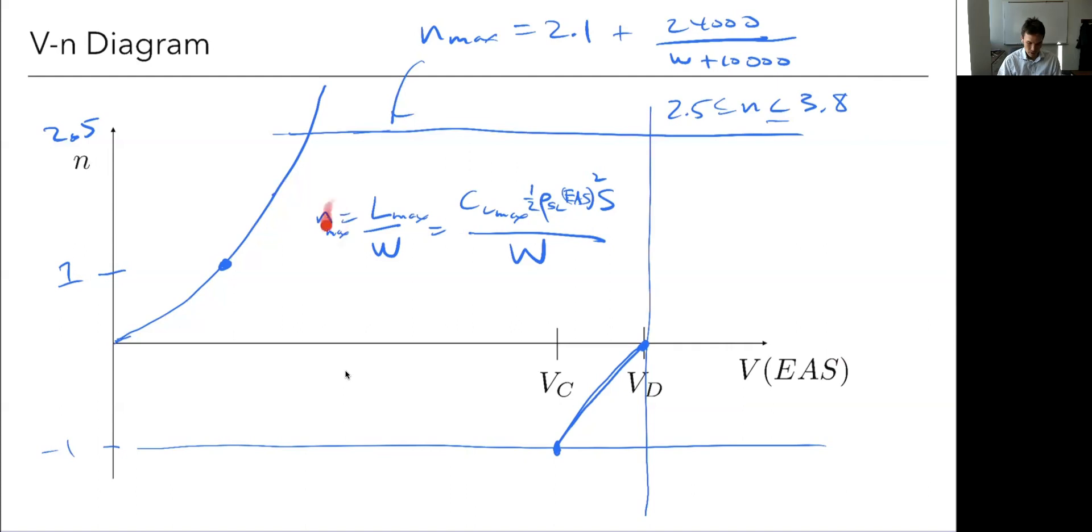So we've been looking normally at this case where n is one, where the lift is equal to the weight. Then we figure out our one g stall speed. But if I'm pulling, say, more g's, I'm pulling two g's, my stall speed is actually reduced. Because at two g's, this here is a two, even though my CL max may be high. I can't go to as high of a speed before I exceed the limits of my airplane for stalling. Whereas at a lower g, I can actually get to a lower speed.